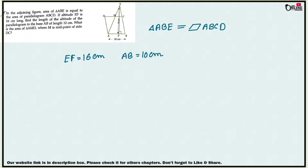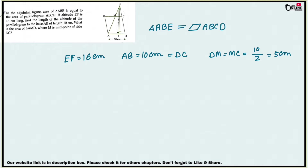Also find the area of triangle AMD, where M is the midpoint of DC. Since M is the midpoint and AB equals 10 centimeters, DC also equals 10 centimeters, so DM and MC each equal 5 centimeters. The area of triangle AEB equals the area of parallelogram ABCD.